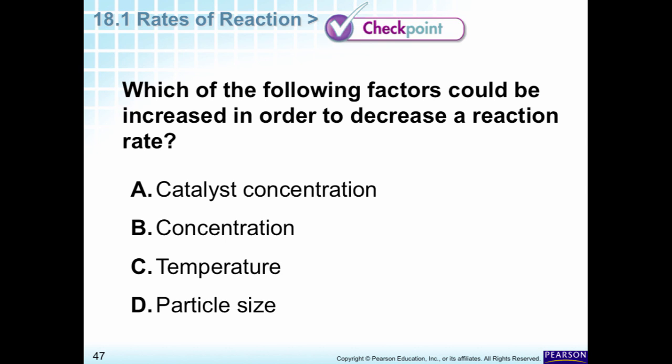Which of the following factors could be increased in order to decrease a reaction rate? Let's check it out on Edge Cannon and I'll be back with the correct answer. Good, particle size, because if its particle size is larger it will take longer for the reaction to occur. It's when you make it smaller, when you grind it up, that it speeds up the reaction.